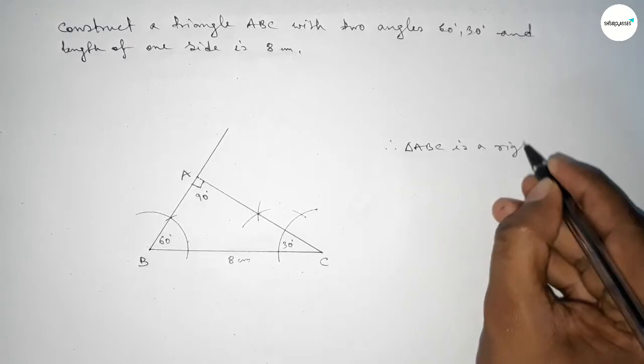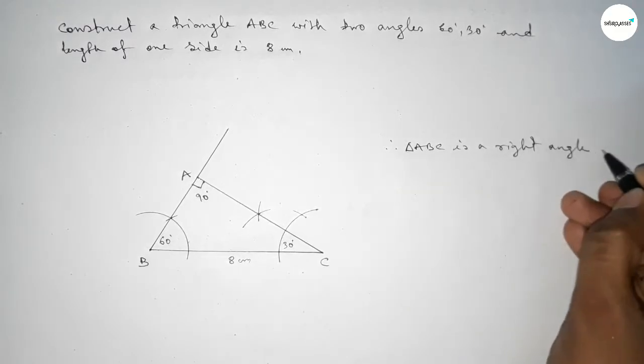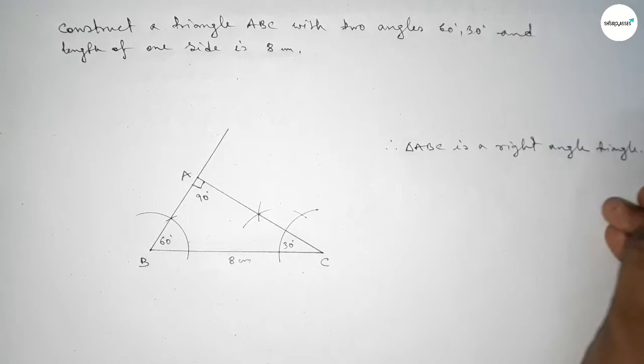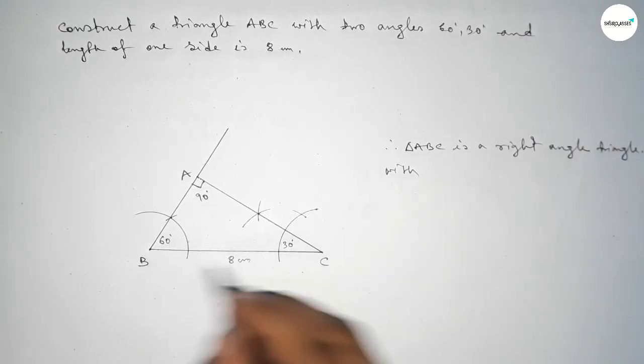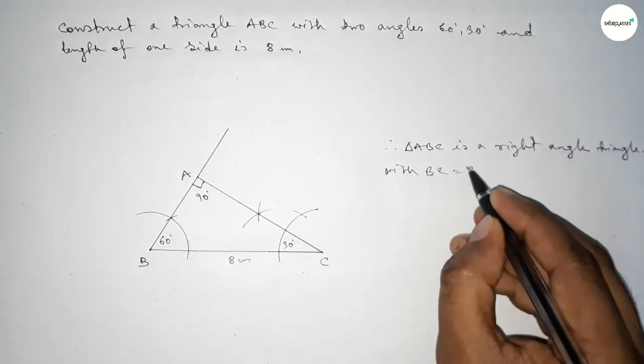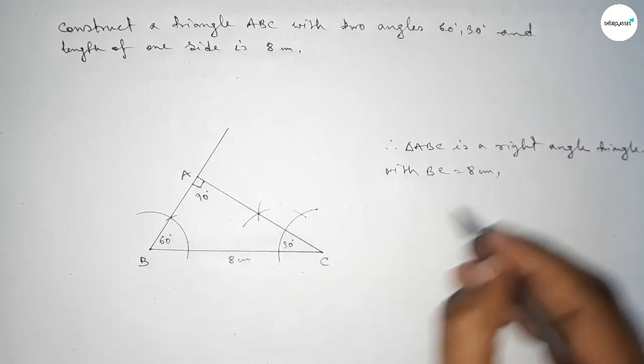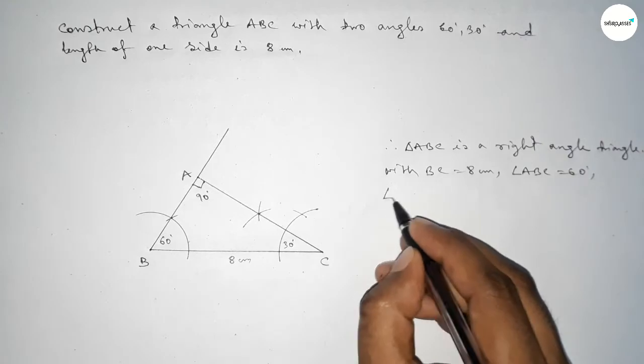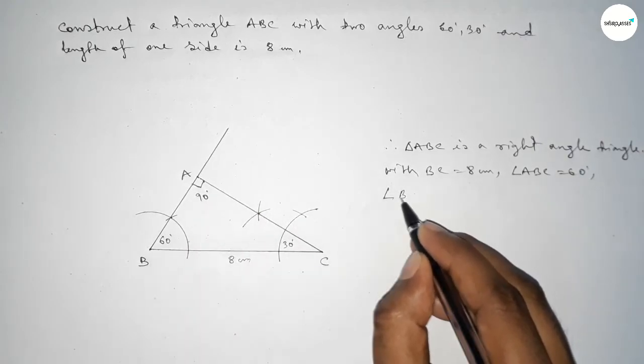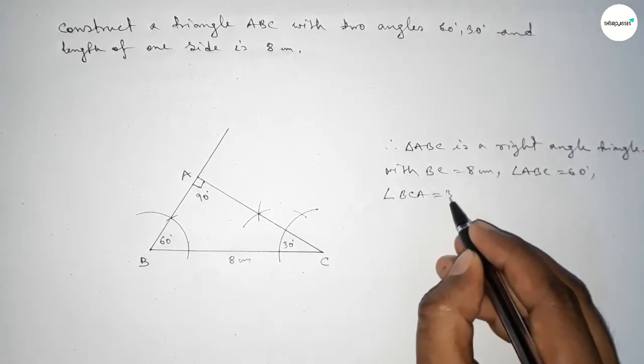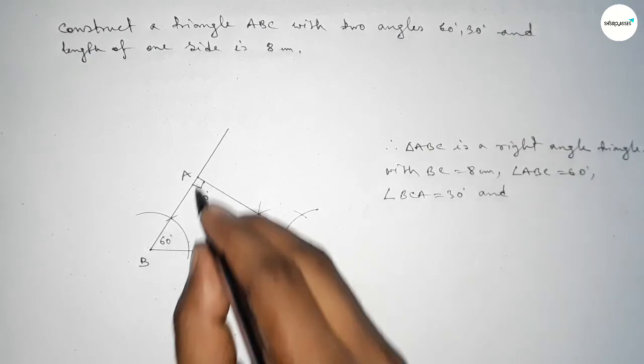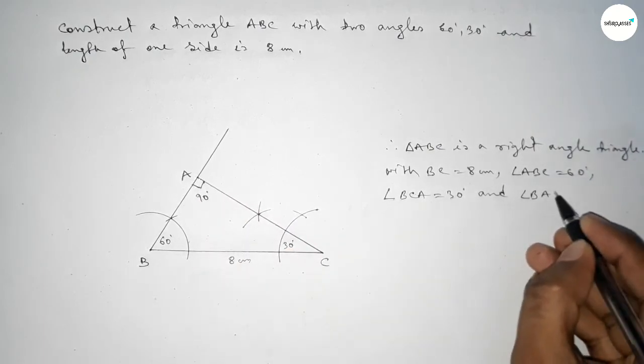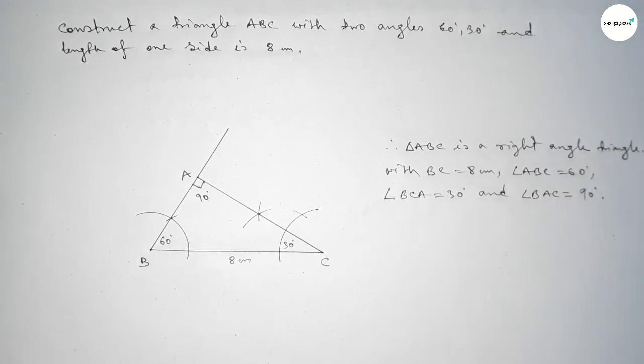Triangle ABC is a right-angle triangle with side BC equal to 8 centimeters, angle ABC equal to 60 degrees, angle ACB equal to 30 degrees, and angle BAC equal to 90 degrees.